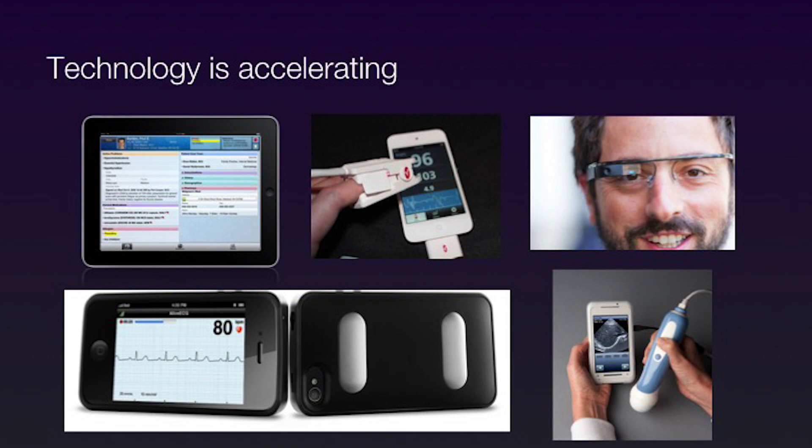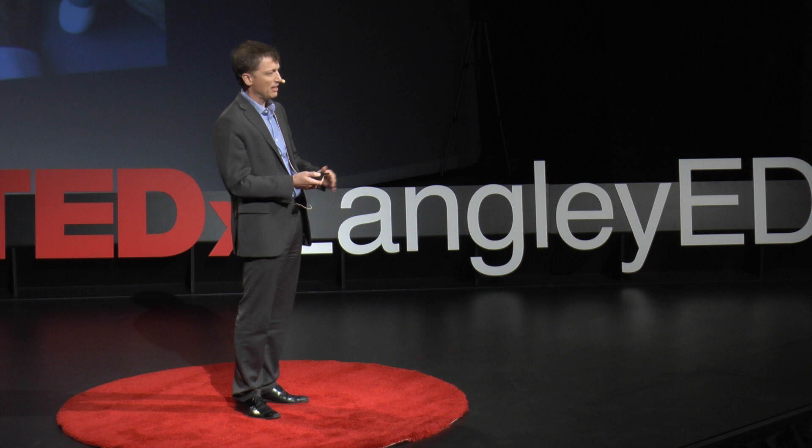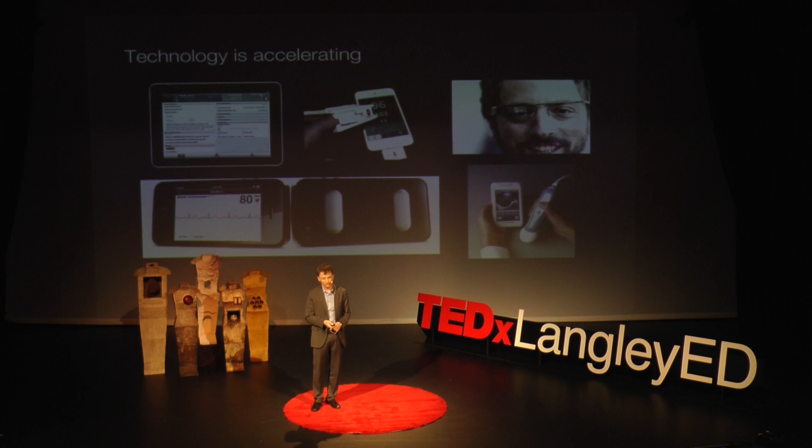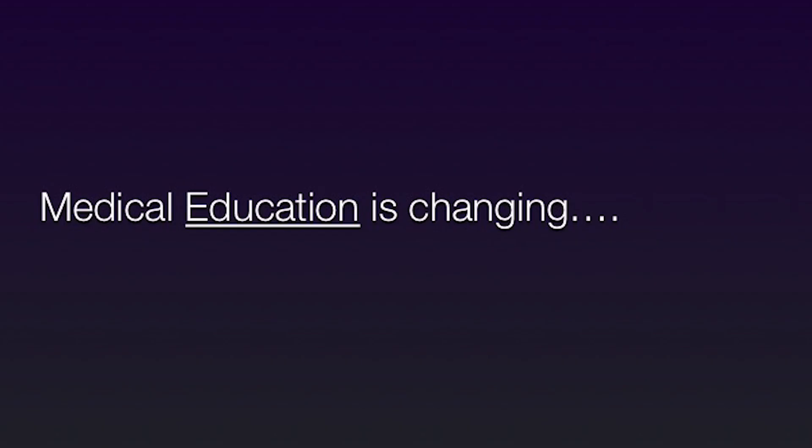We're trying to cope with this through technology. The top left is an electronic patient record; the middle thing is a sensor you can buy for $35 on Amazon to tell you how badly your smoking is affecting your oxygenation. Google Glass may be relevant to what we can do. I can clip onto my iPhone and stick it on my chest to get an immediate electrocardiogram — that costs $200. And on the bottom right is the stethoscope replacement: a handheld ultrasound, so I don't have to listen to your heart anymore — I see it.